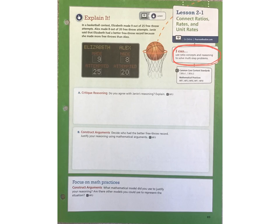Let's take a look at the Explain It question first. In a basketball contest, Elizabeth made 9 out of 25 free throw attempts. Alex made 8 out of 20 free throw attempts. Janie said that Elizabeth had a better free throw record because she made more free throws than Alex. The scoreboard shows us about Elizabeth and Alex and the number of free throws that each of them made.